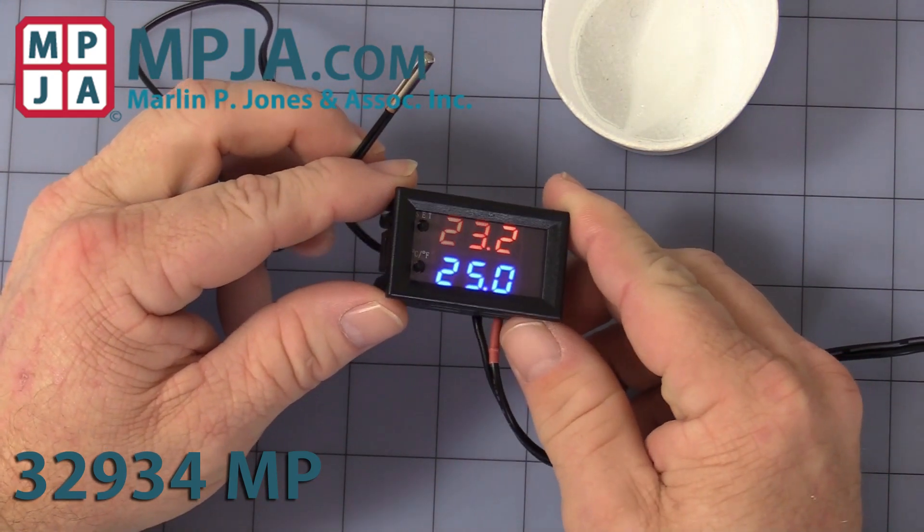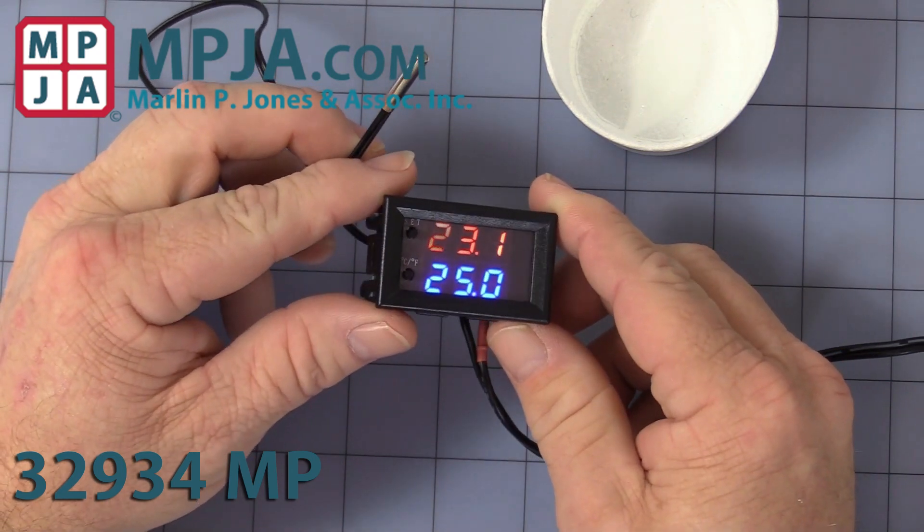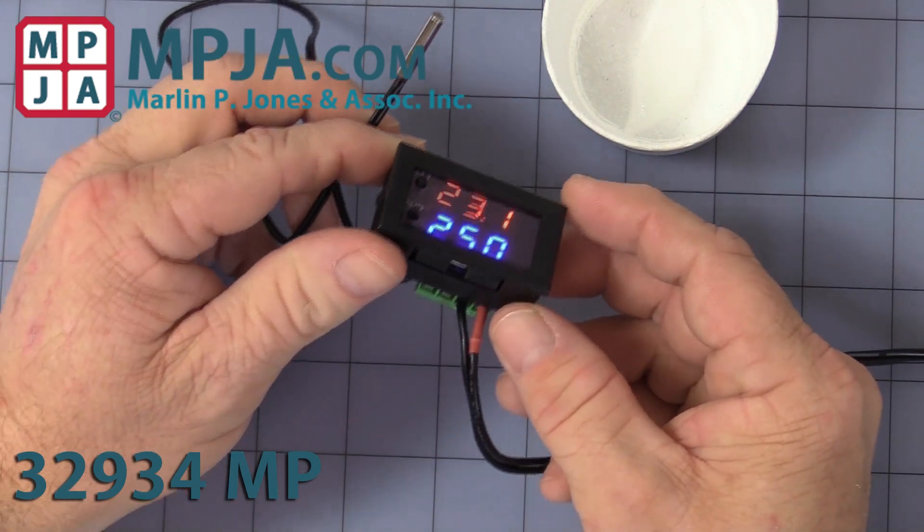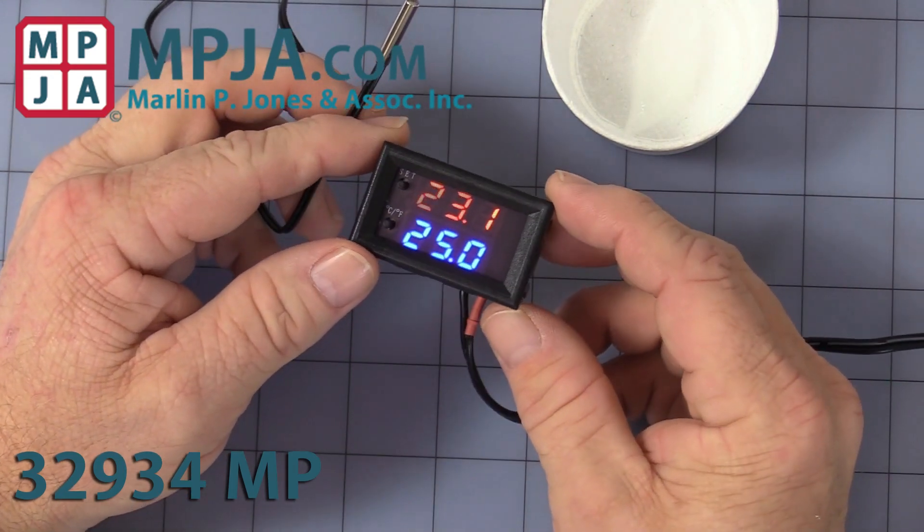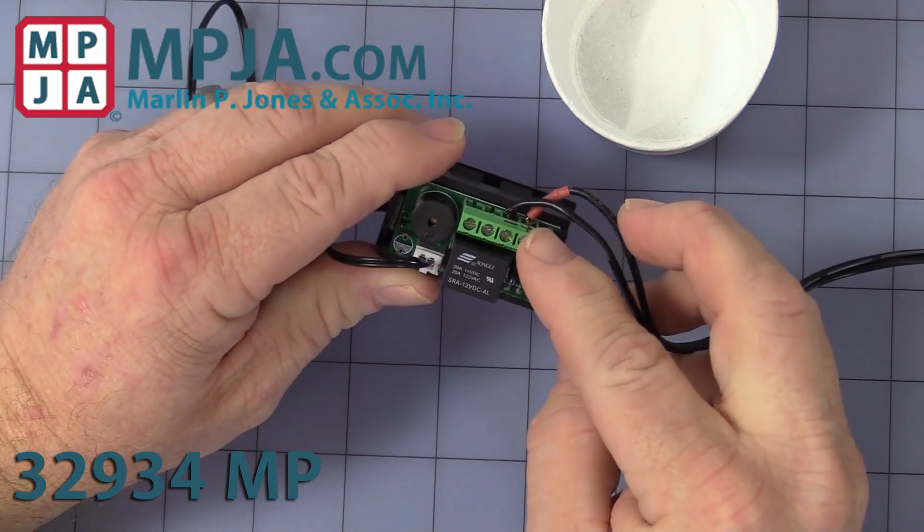It has two set buttons on the front, one marked set, one marked CF. Currently it's displaying Celsius. It operates off of 12 volts DC on the back. You can see you hook it up to the terminal here.